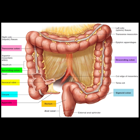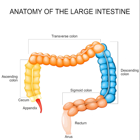The colon of the large intestine is the last part of the digestive system. It has a segmented appearance due to a series of saccules called haustra. It extracts water and salt from solid wastes before they are eliminated from the body and is the site in which the fermentation of unabsorbed material by the gut microbiota occurs. Unlike the small intestine, the colon does not play a major role in absorption of foods and nutrients.